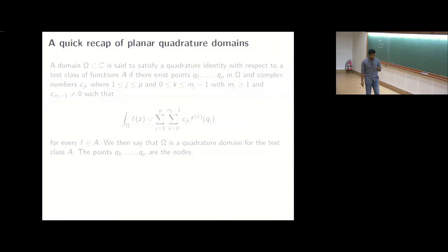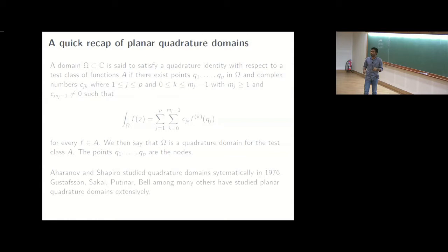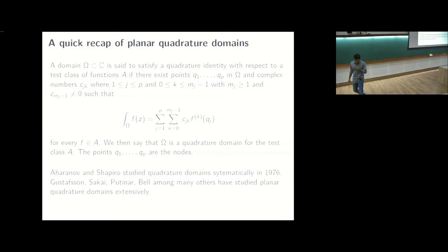This is a classical theory and the first exploits into this was probably in the 60s when Epstein considered the simplest quadrature identity that we can think of, namely the mean value theorem and studied what would be the impact of such a quadrature identity on the domain. Epstein and Schiffer studied it more, they dropped certain hypothesis and I think it was proved in one of those lectures that that will force the domain to be a disk centered at that particular point.